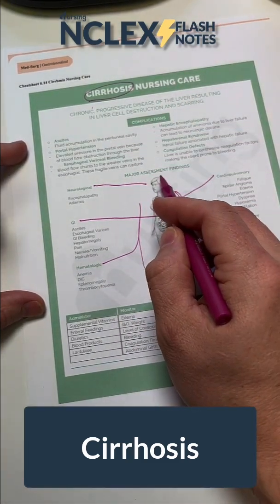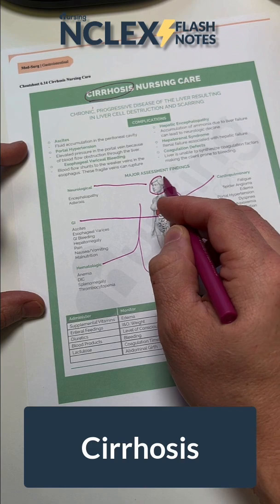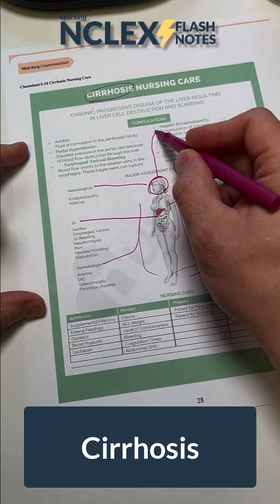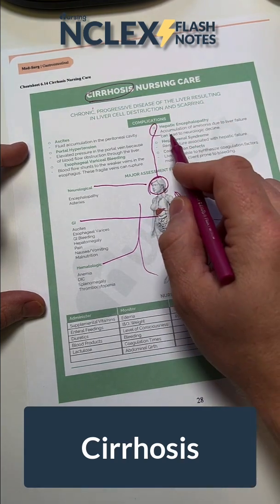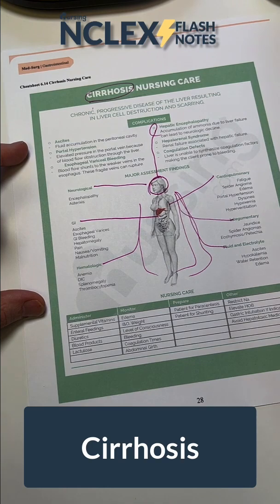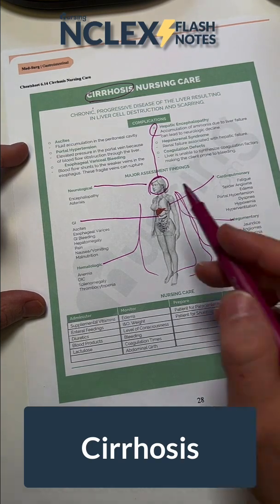Neurologically, you're going to see hepatic encephalopathy. What is hepatic encephalopathy? It's accumulation of ammonia due to liver failure.